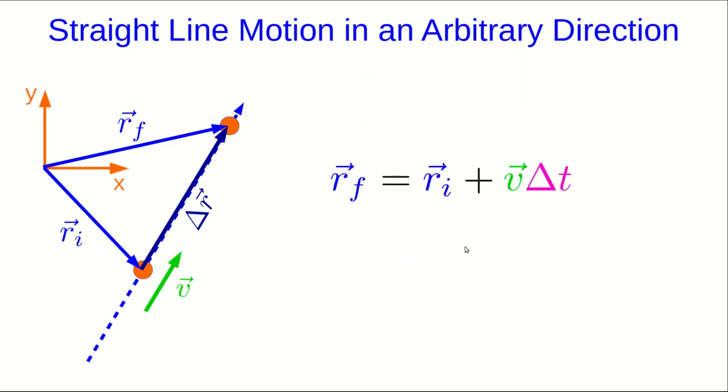For motion in an arbitrary direction at constant velocity, we can write the position at any time in terms of some earlier position plus v delta t.